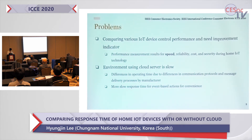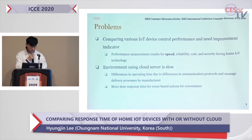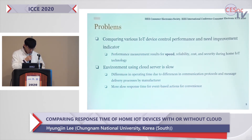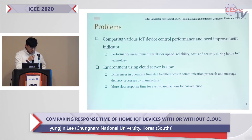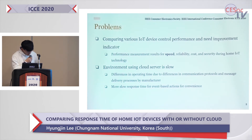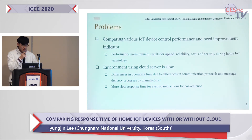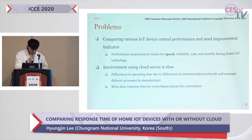So we need to check IoT device operating speed. Comparing various home IoT device control performance needs to be provided. IoT performance measurement means many things, including speed, reliability, cost, and security. But we focused on speed.